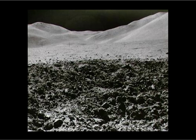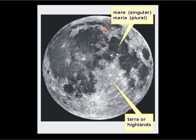These mountain ranges are not tectonic — they're caused by large impact events piling up material. If you look back at the Apennine Mountains, they are part of a roughly circular feature you can almost make out as a big crater. All of the highland areas on the Moon were formed from impact piling up material.